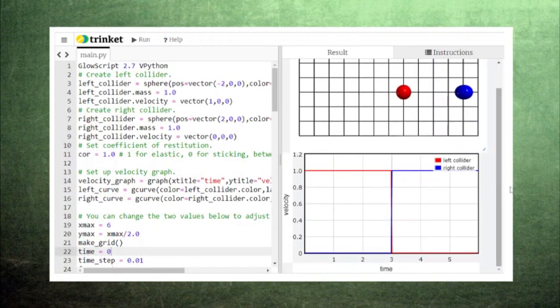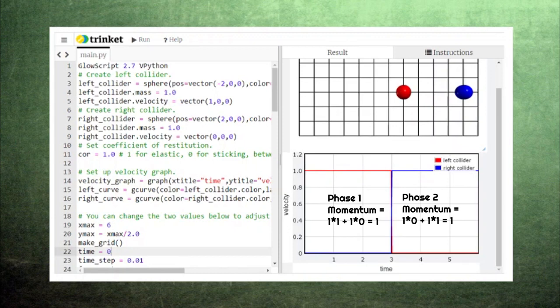From the graphs, we can calculate the total momentum before the interaction and after the interaction and get the same number. We call this sameness the conservation of momentum.